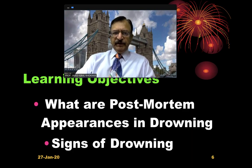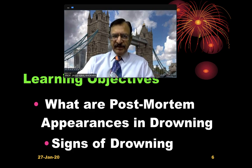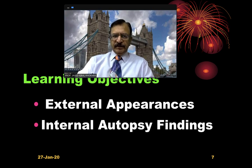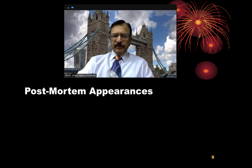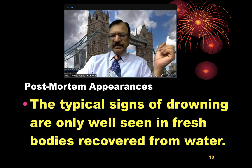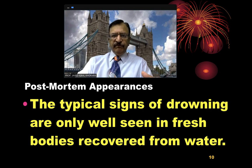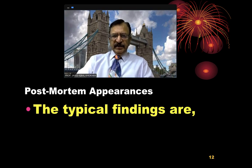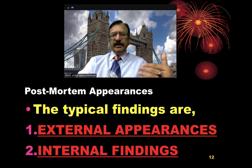The learning objective of this lecture is to discuss post-mortem appearances in drowning. They are the signs of drowning and they are either external appearances or internal autopsy findings. They are signs of asphyxia unless death occurred from some other cause. The typical signs of drowning are only well seen in fresh bodies immediately when they are recovered from the water, but later on when putrefaction sets in, these signs are masked.